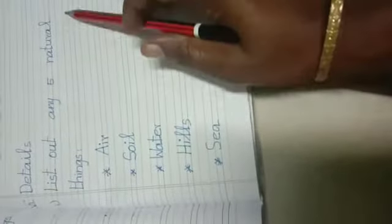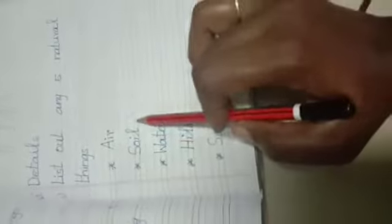List out any natural things. If you notice the point for natural things: air, soil, water, hills, seas.